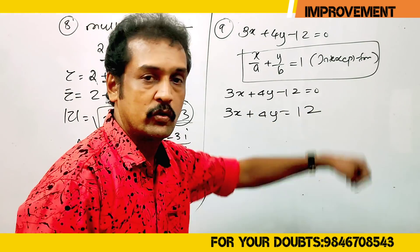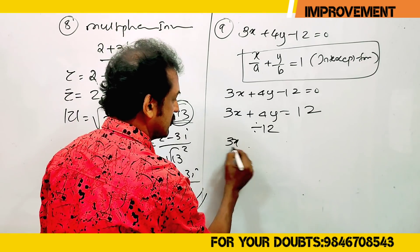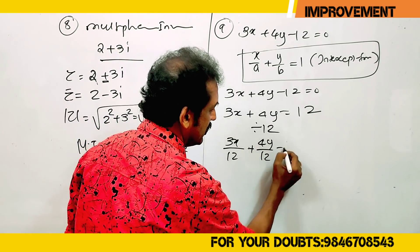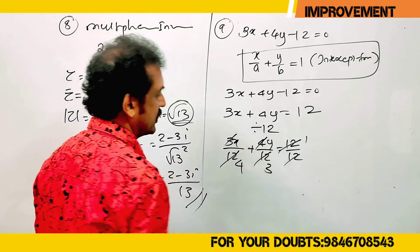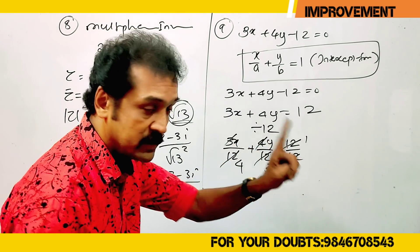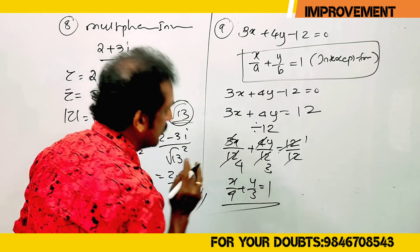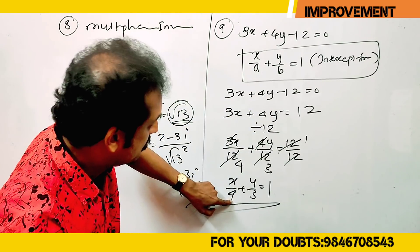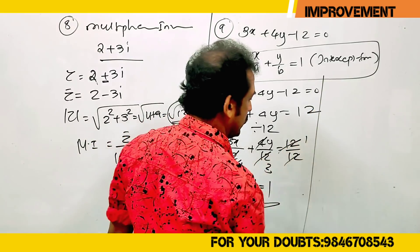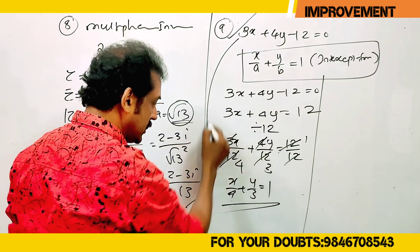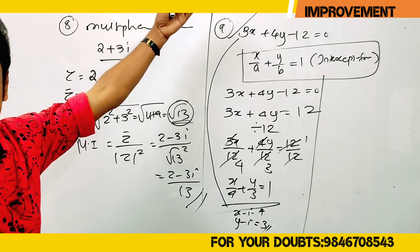Dividing: 3x by 12 plus 4y by 12 equals 12 by 12. Simplifying: x by 4 plus y by 3 equals 1. So x-intercept a equals 4 and y-intercept b equals 3. The intercepts are 4 and 3.